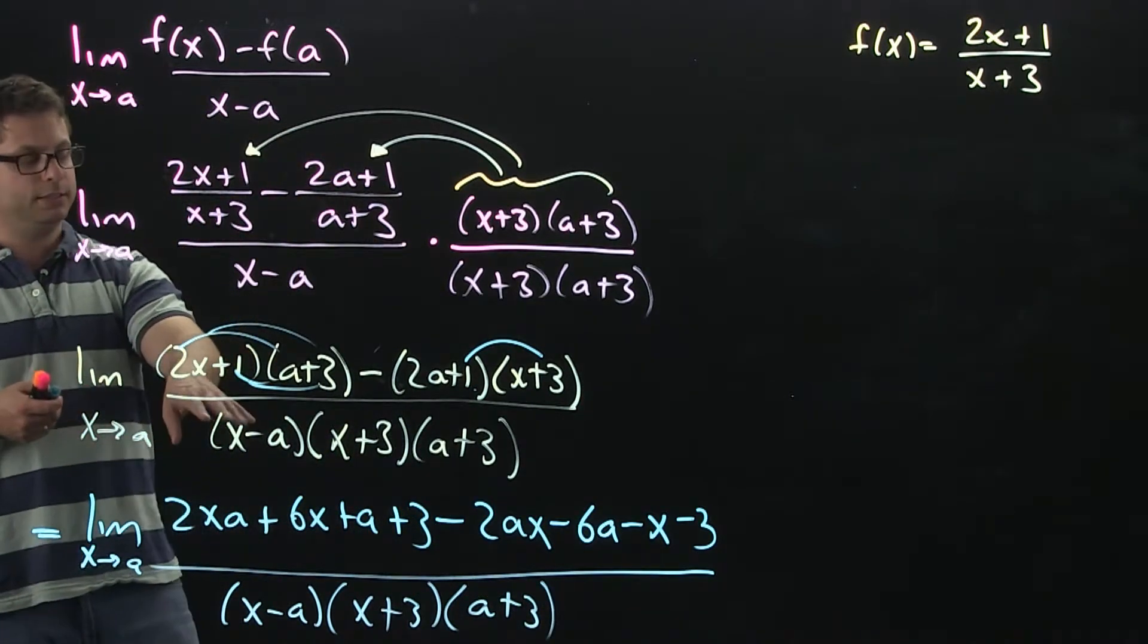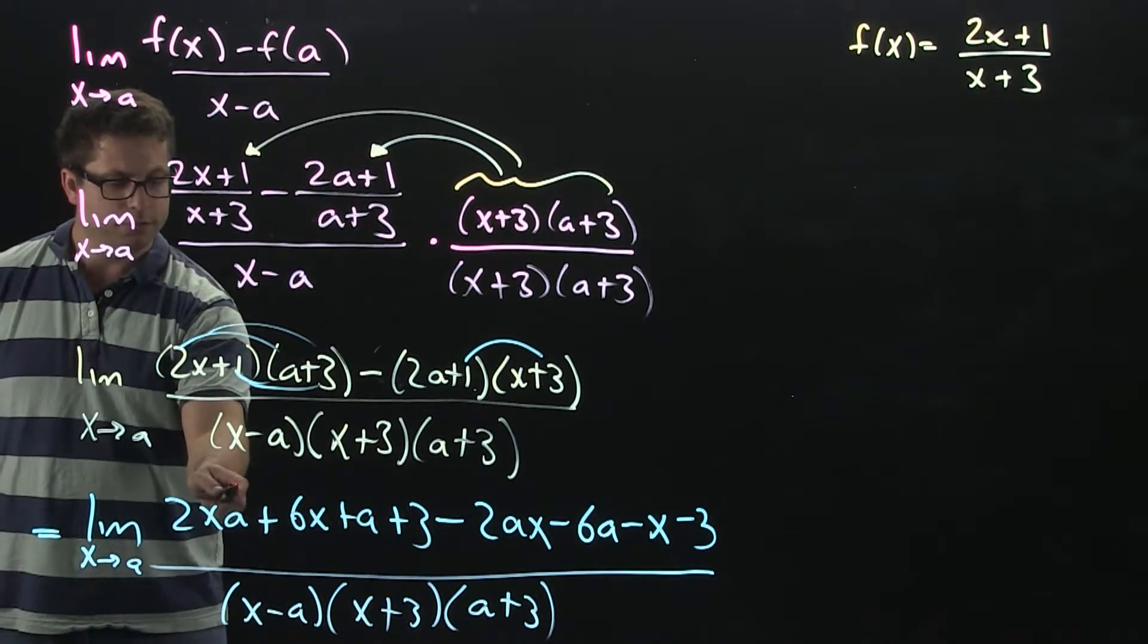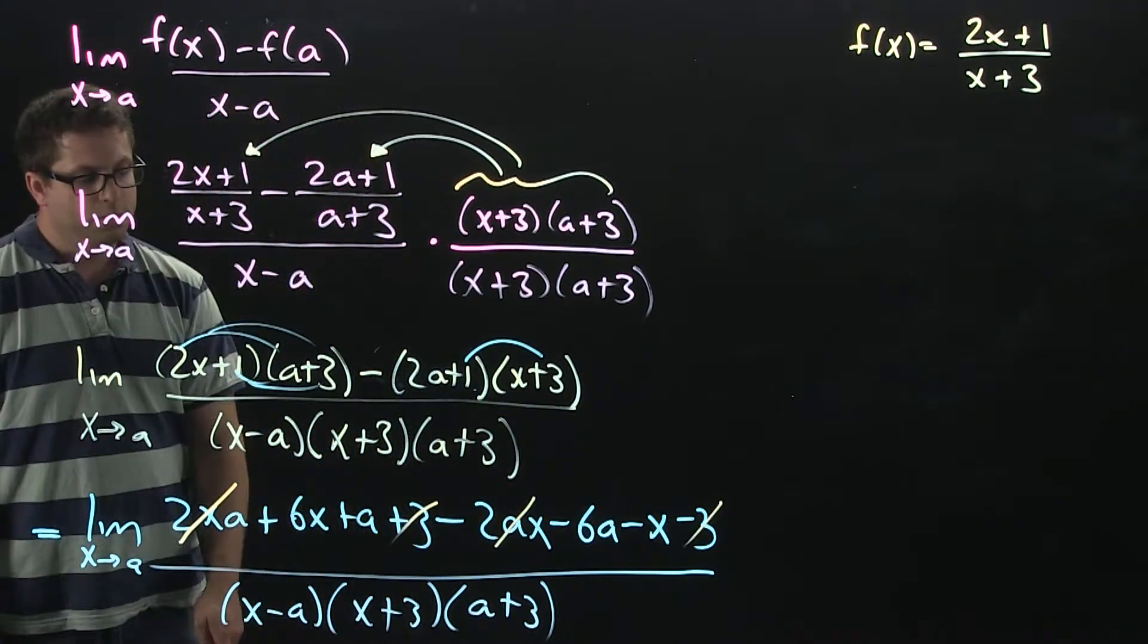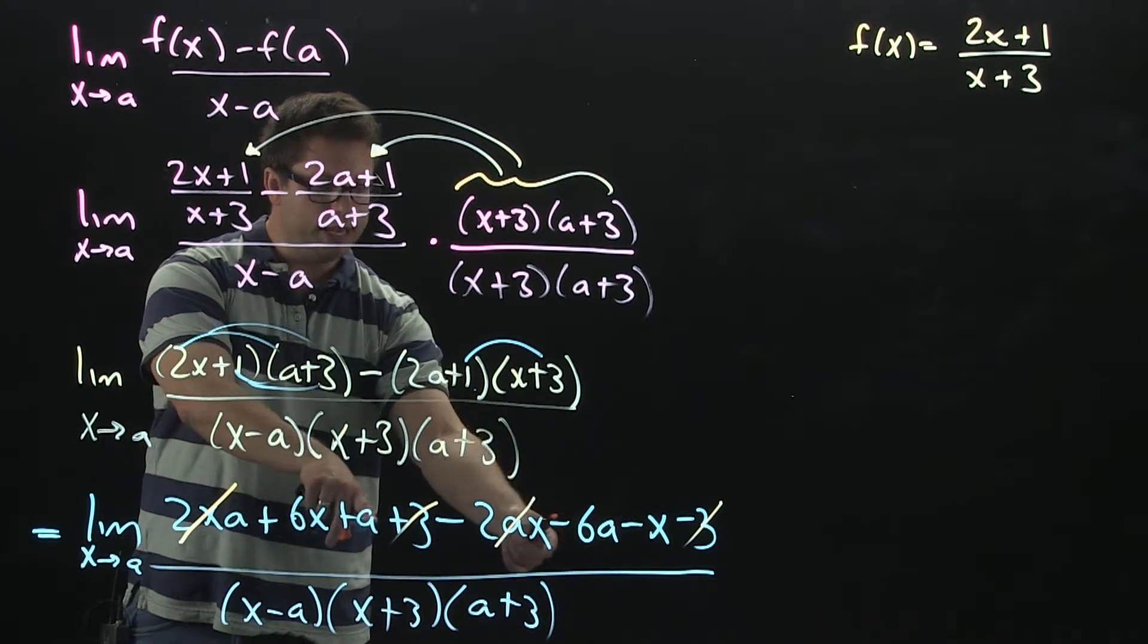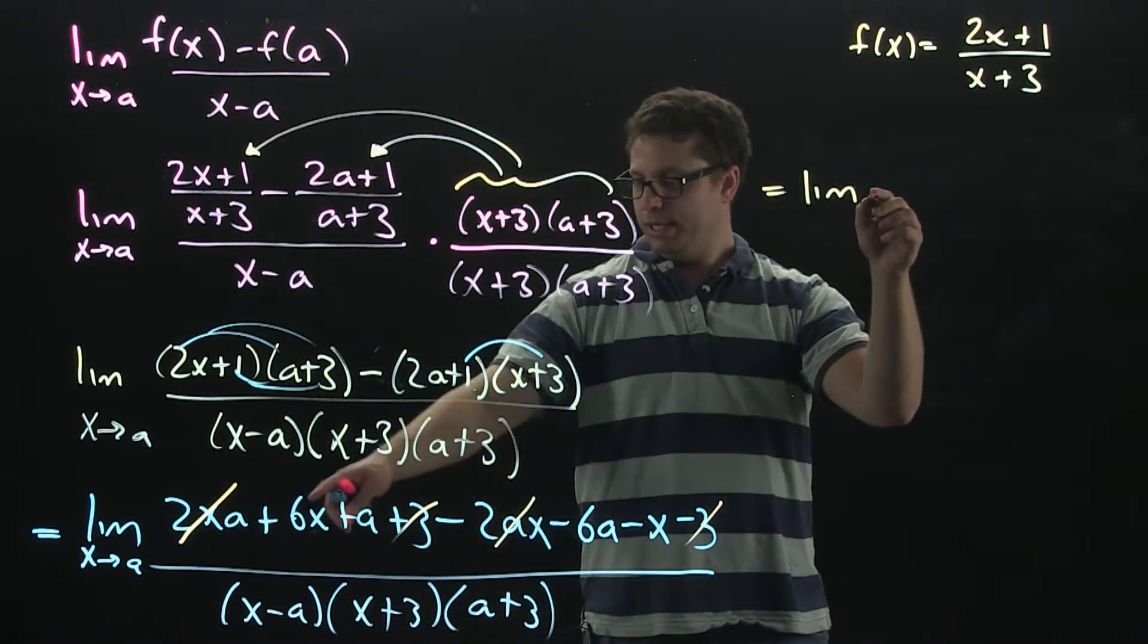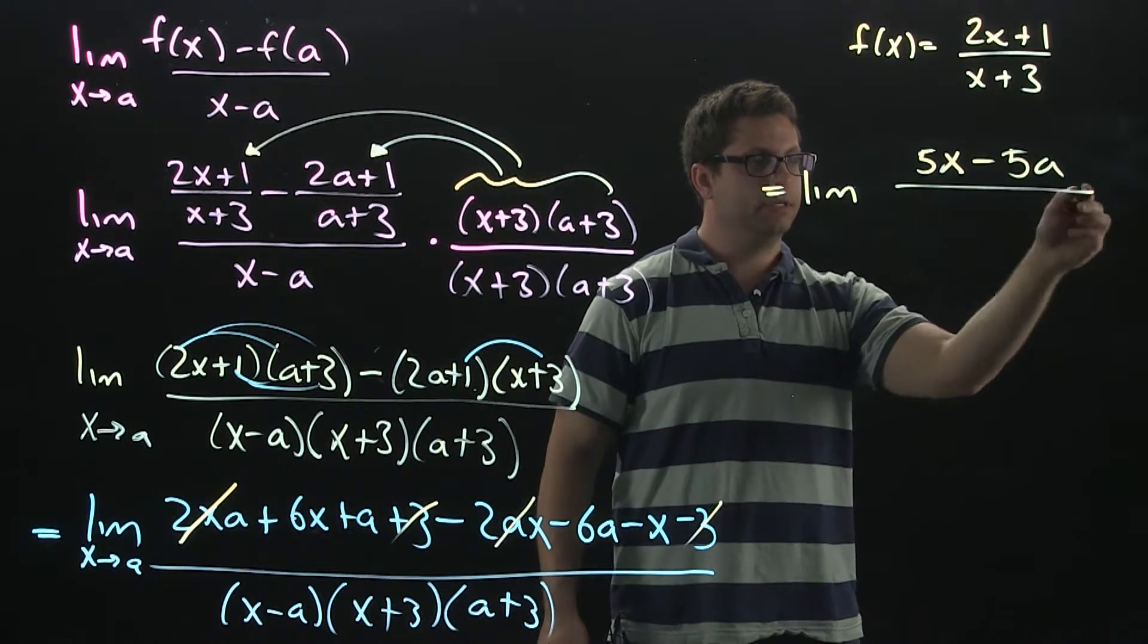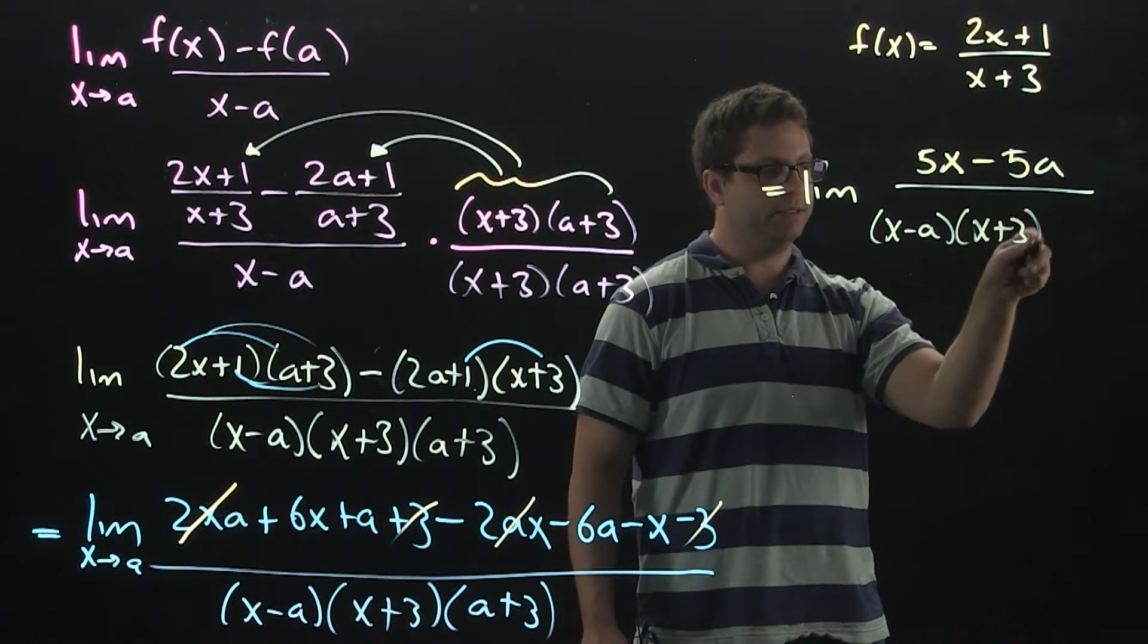Okay. So, let's go ahead and find if we have any like terms, see if any of these things cancel. In fact, they do. We have the 2ax here. The 3s cancel. That's nice. And then we have 6x and then a minus x. So, those are like terms. And we also have an a and a minus 6a. So, that does simplify to be 6x minus x is 5x. Plus a and a minus 6a to make minus 5a. And then the bottom is still x minus a, x plus 3, a plus 3.